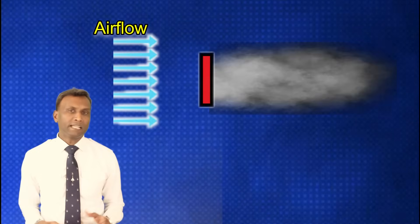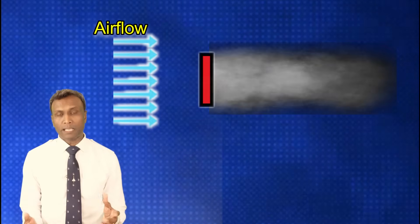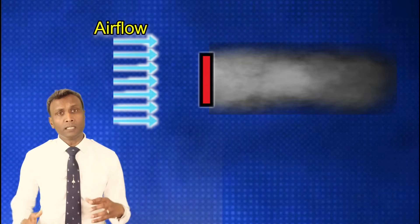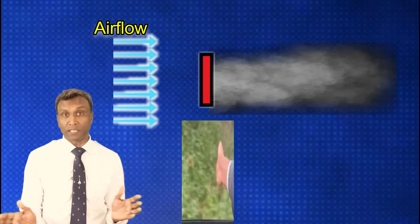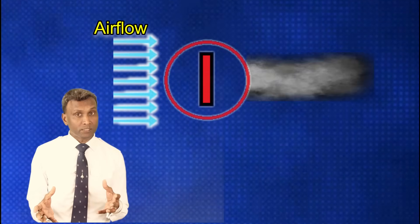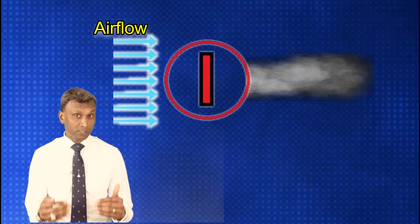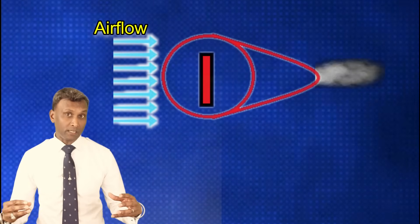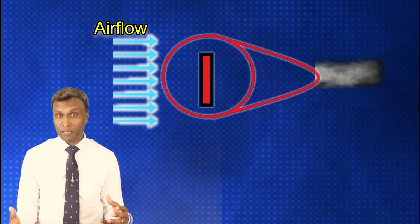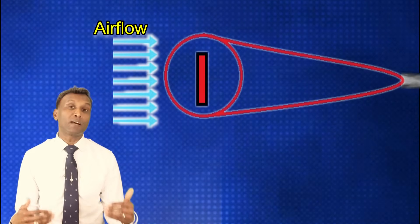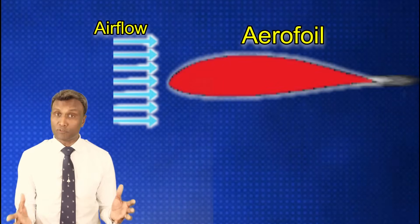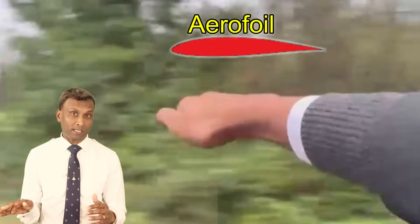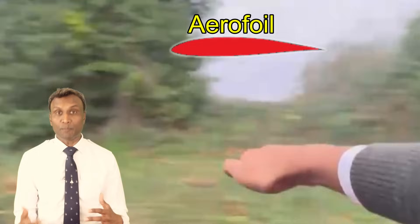In aviation we often associate friction with drag. The shape of an object significantly influences the drag it experiences. Envision a flat plate moving against an airflow — it generates noticeable turbulence, representing drag. However, by enclosing this plate within a sphere, drag is considerably reduced. Now elongating the sphere on its backside into a pointed shape creates an aerodynamic form that further minimizes drag. This stretched and tapered shape is commonly known as an aerofoil — it's like turning a hand sideways to diminish resistance and enhance aerodynamic efficiency.